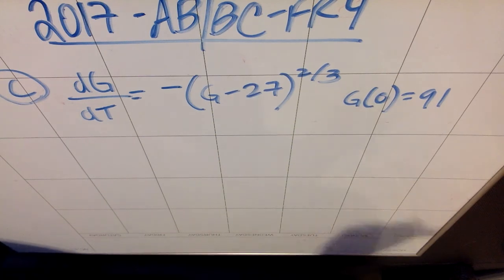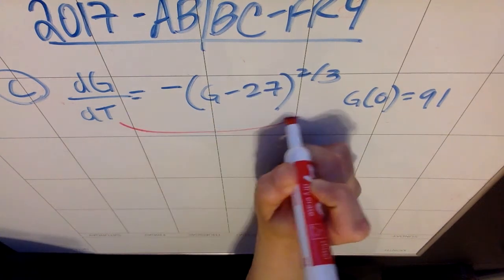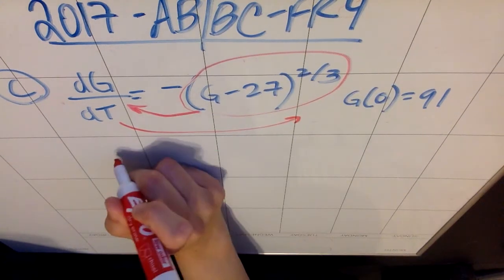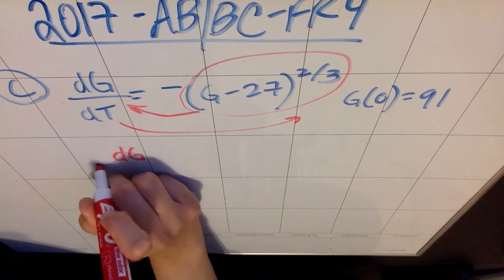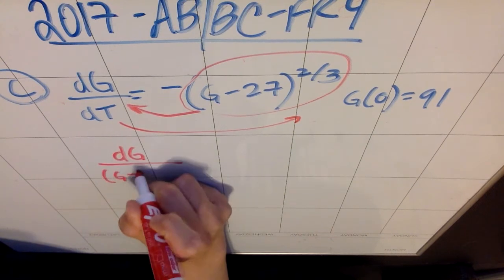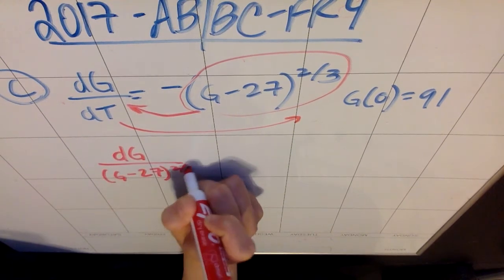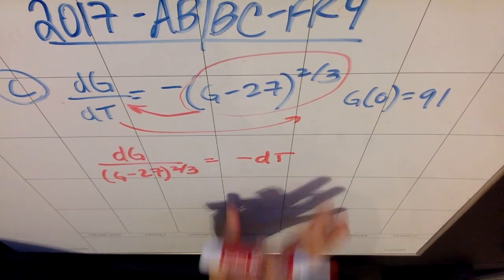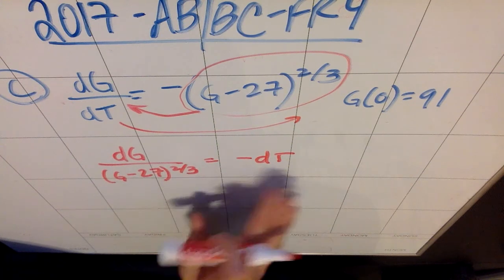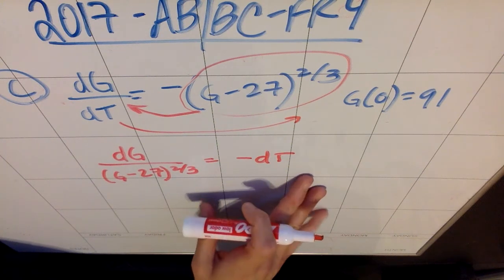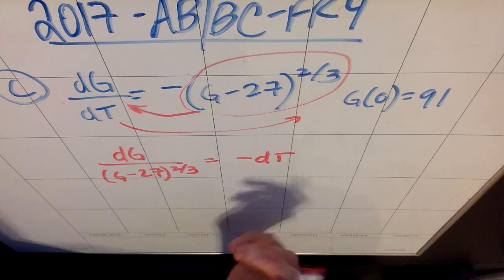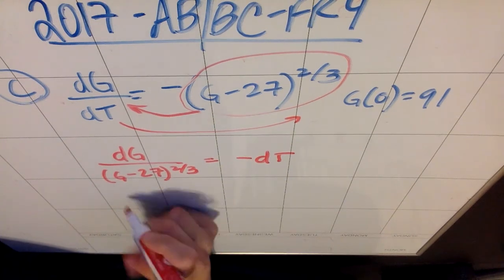First thing you have to do is separate the variables. So dt is going to come over here, and all of this stuff, I'm actually going to leave the negative with the t, all of this stuff's going to go over here. I'm going to get dG divided by this ugly G mess to the 2/3 equals a negative dt. Separating the variables is the first point. If you don't do this, you get nothing. It doesn't matter if you do the most inventive, creative thing in the whole world after this, it won't matter. You're not getting any credit.